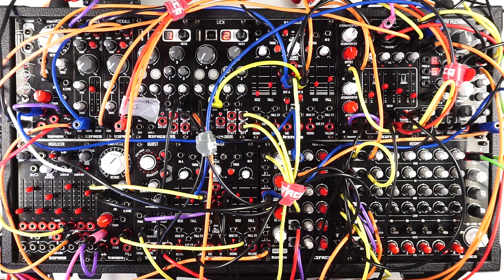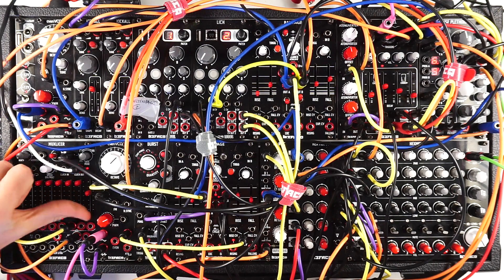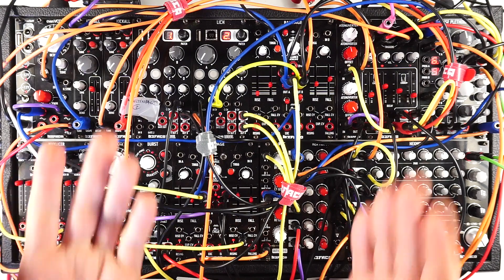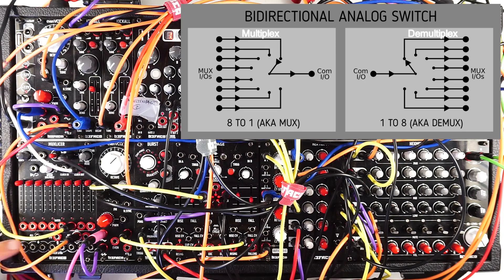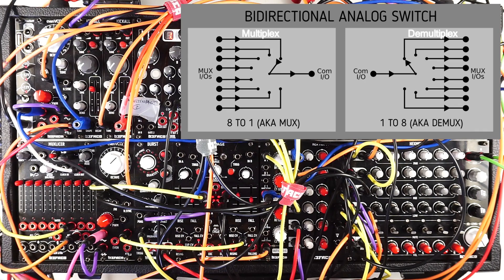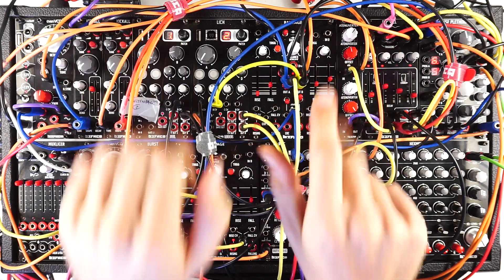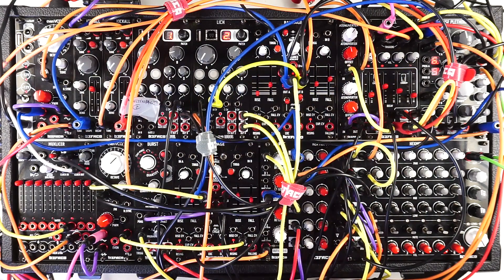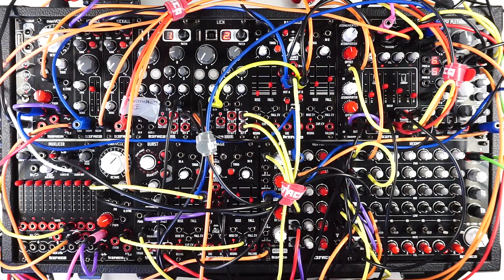And lastly, we'll dive into some multiplexing. What is multiplexing? Multiplexing takes multiple signals and combines them into one. Demultiplexing takes one signal and disperses it into multiple signals. For the MUX slicer, this is eight signals to one when multiplexing, and one signal to eight when demultiplexing.